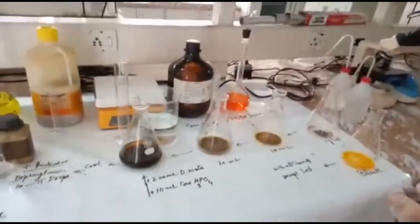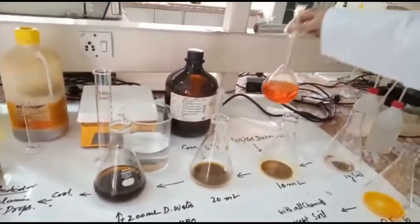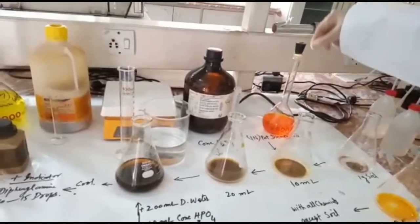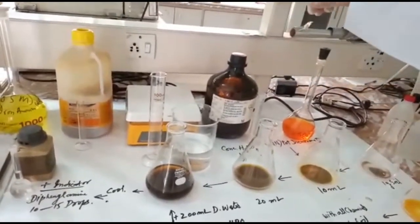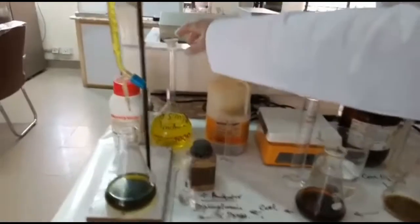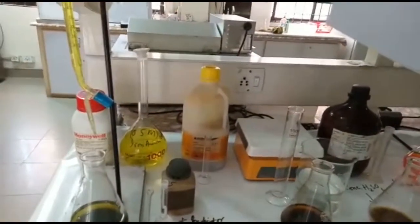For this determination we need certain chemicals. For example, we need to prepare one normal potassium dichromate solution, concentrated sulfuric acid, diphenyl amine indicator, and ferrous ammonium sulfate 0.5 normal solution.